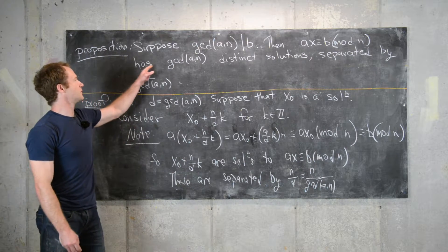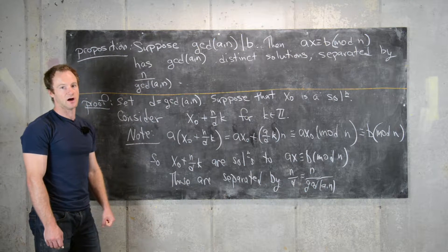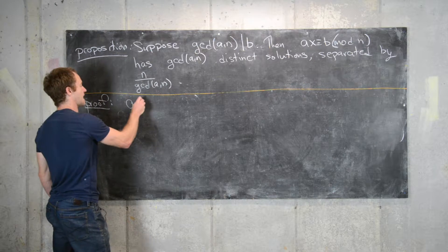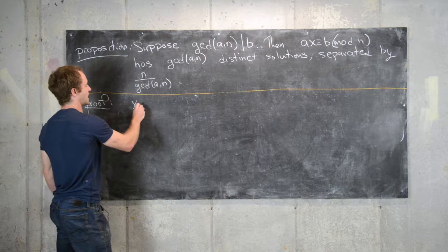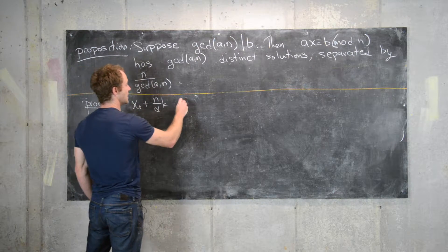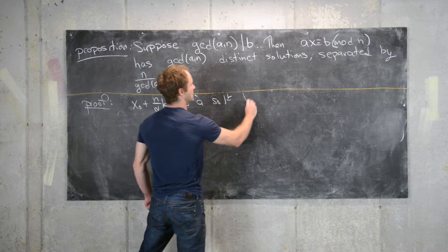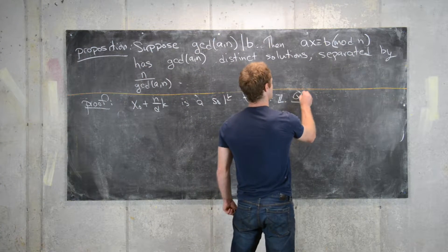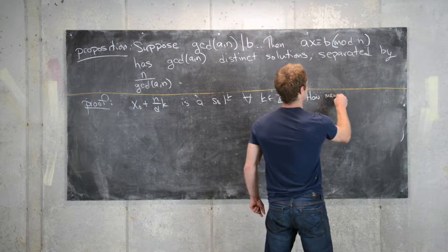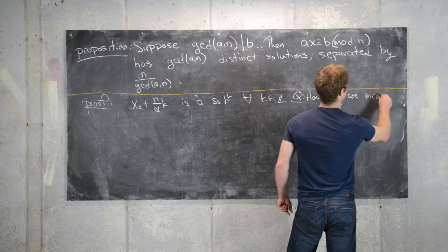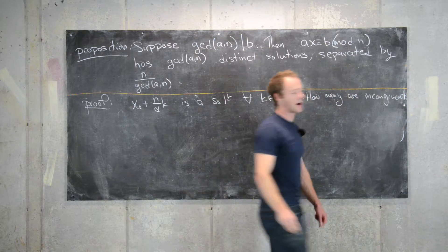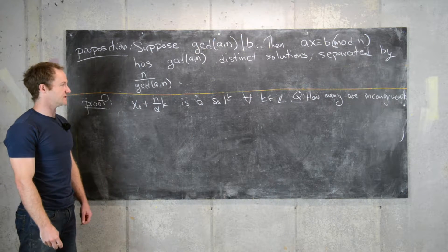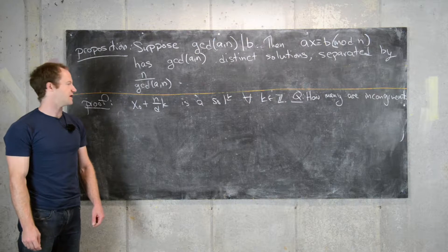Now we'll prove that there are in fact only GCD(a,n) of these solutions. The next question is: how many are incongruent? In other words, how many distinct solutions do we get? We'll start by taking two solutions and seeing what they must satisfy in order to be congruent.